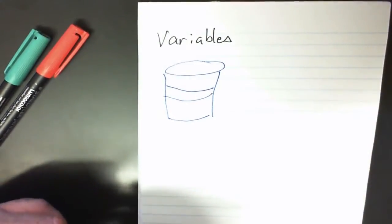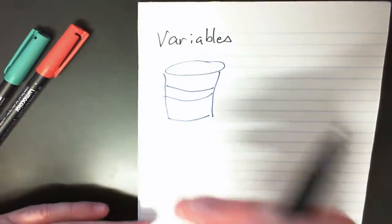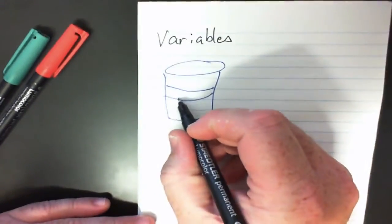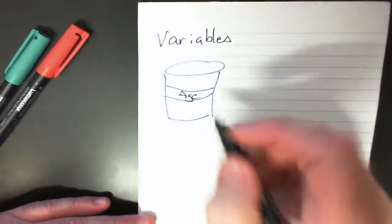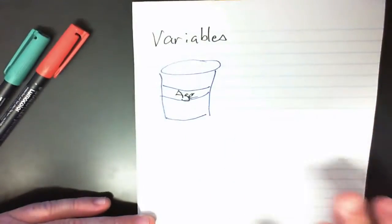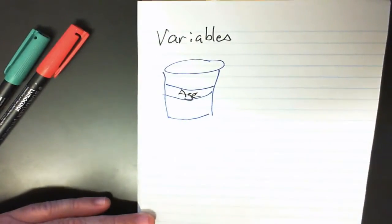The best thing about the bucket is we can actually give it a label, so we can give it a name such as age. If we need to use this information or call this information, we can just call whatever the user puts in here by age.